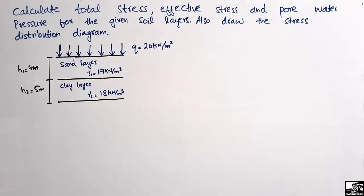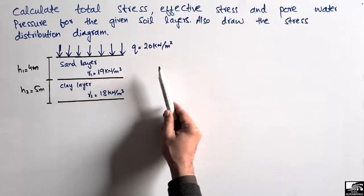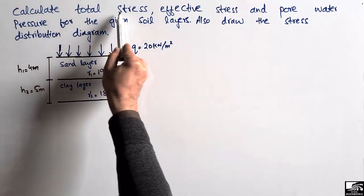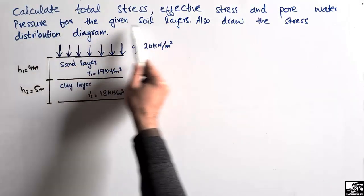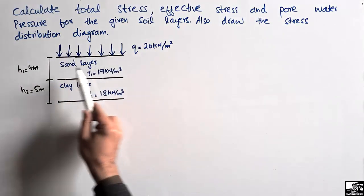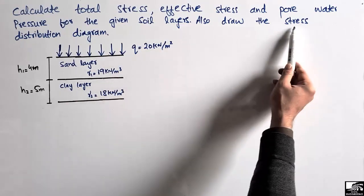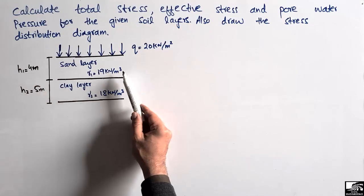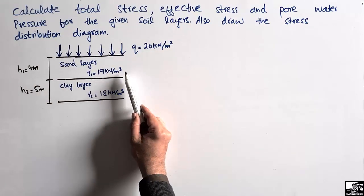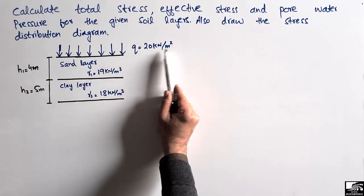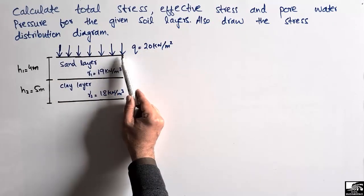Hello guys, welcome back to the civil engineering YouTube channel. Please subscribe our channel for civil engineering videos. Today our lecture is about soil mechanics. In this lecture we are going to find out the stresses in the soil layers. We have to solve one numerical problem: calculate the total stress, effective stress, and pore water pressure for the given soil layers. We have two soil layers — a sand layer and a clay layer — and we have to draw the stress distribution diagram. There is a surcharge load of 20 kN per square meter acting on the top of these layers.